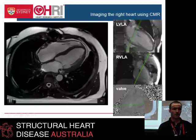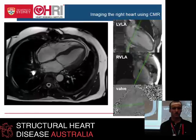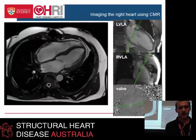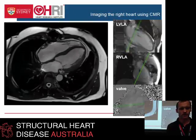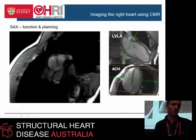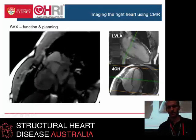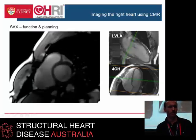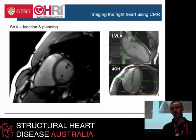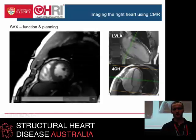Already you know what the RV and LV function are fundamentally before you've even done any circles or quantitation, if you've done it right. So here's the sort of money sequence - it's a short-axis stack, and we'll plan that off the four-chamber. We've planned it with an LVLA, an RVLA and the valve view, and so we know that our short-axis slices are perpendicular to the septum.